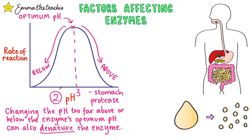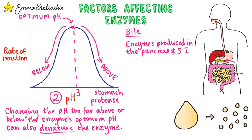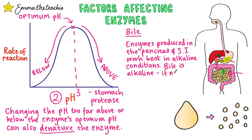Maintaining the right pH is important for efficient digestion. Bile is produced in the liver, stored in the gallbladder, and acts in the small intestine. Enzymes produced in the pancreas and the small intestine work best in alkaline conditions. When food leaves the stomach and enters the small intestine, some hydrochloric acid comes along with it. Bile is an alkaline liquid, so it is able to neutralise this HCl from the stomach, maintaining the right alkaline conditions needed for the enzymes in the small intestine to work properly.